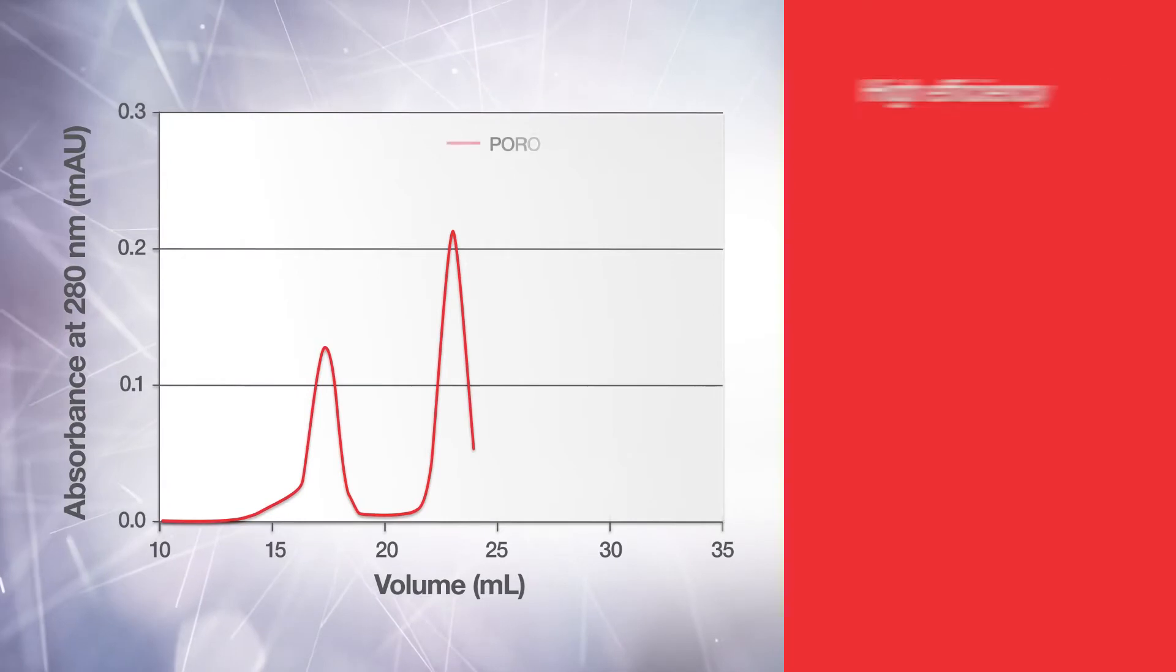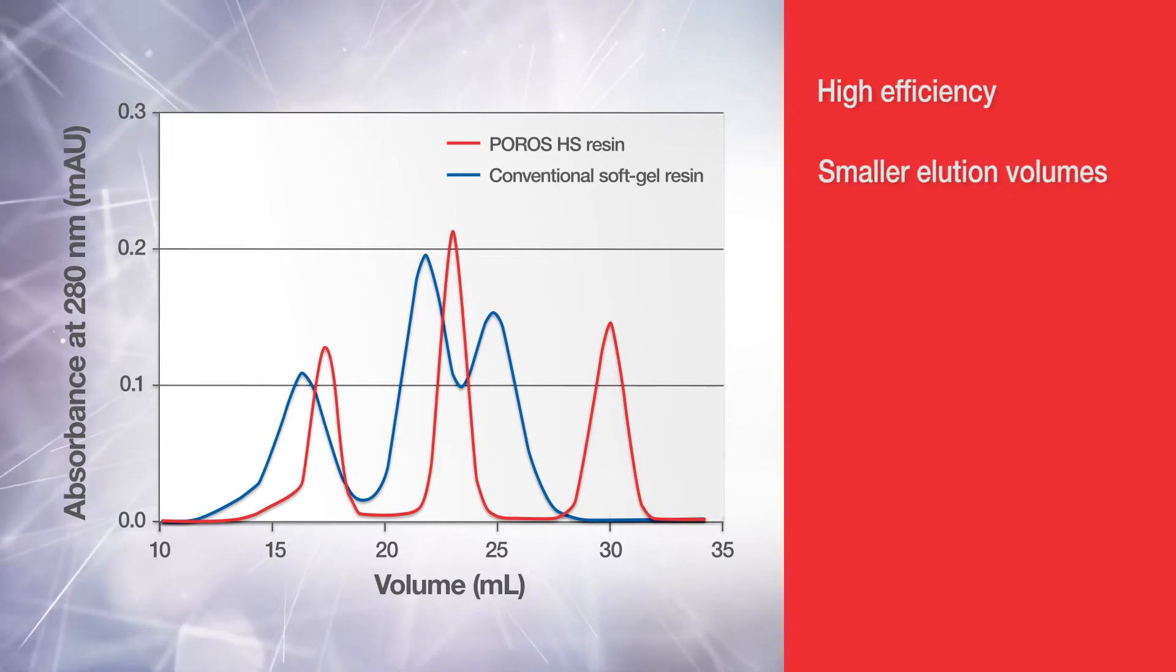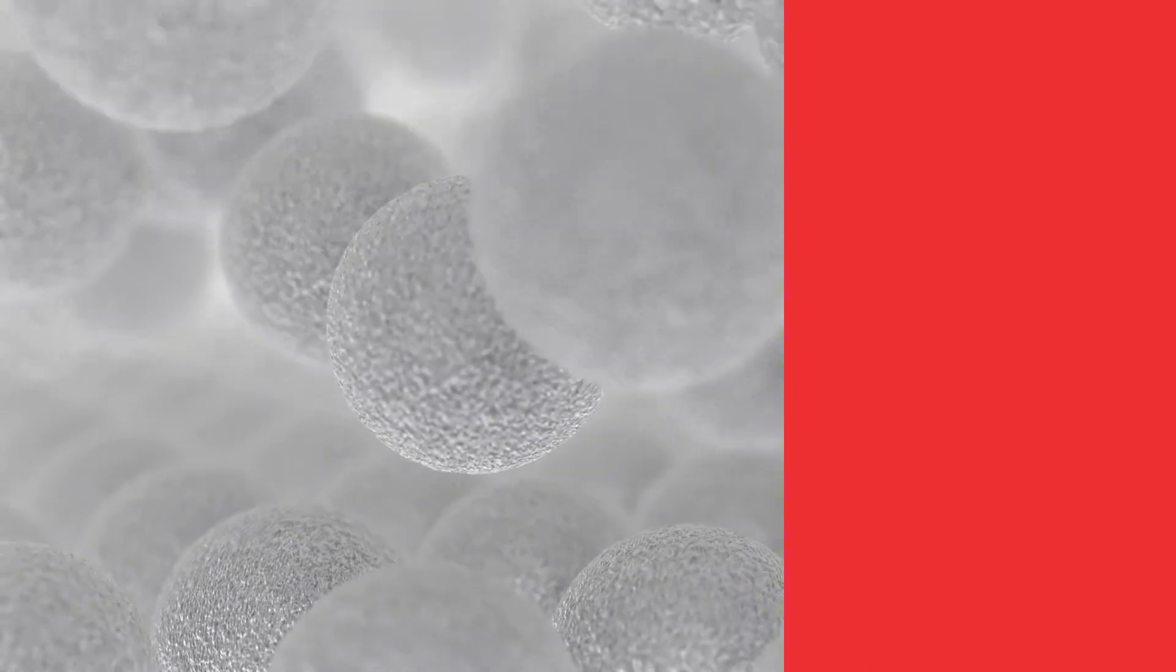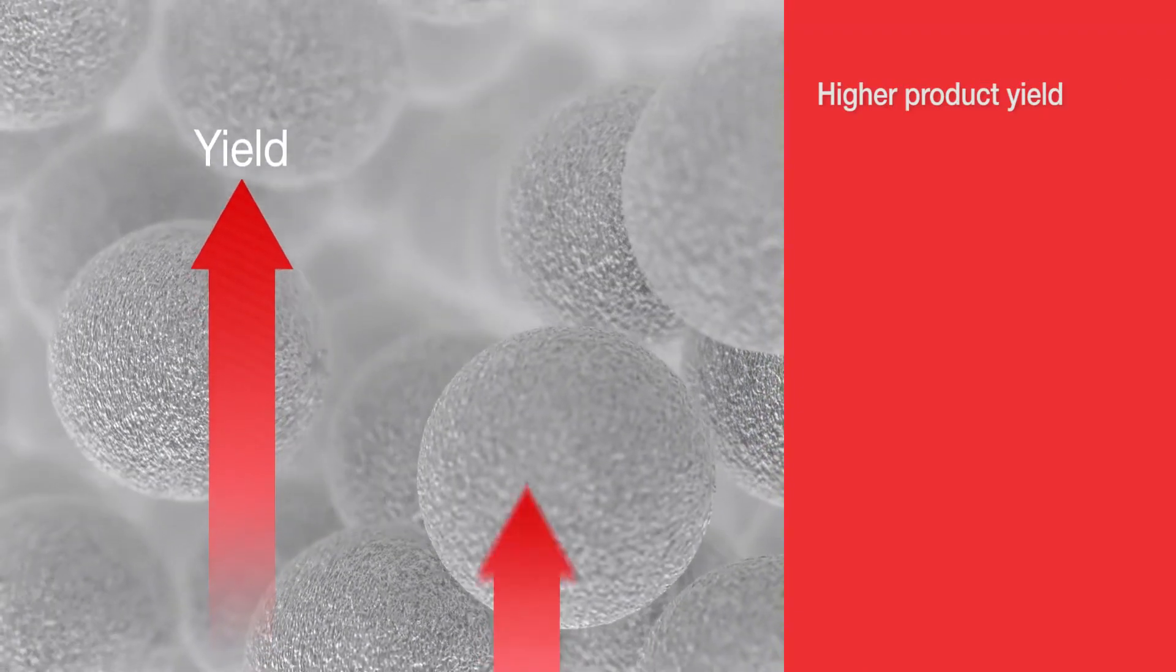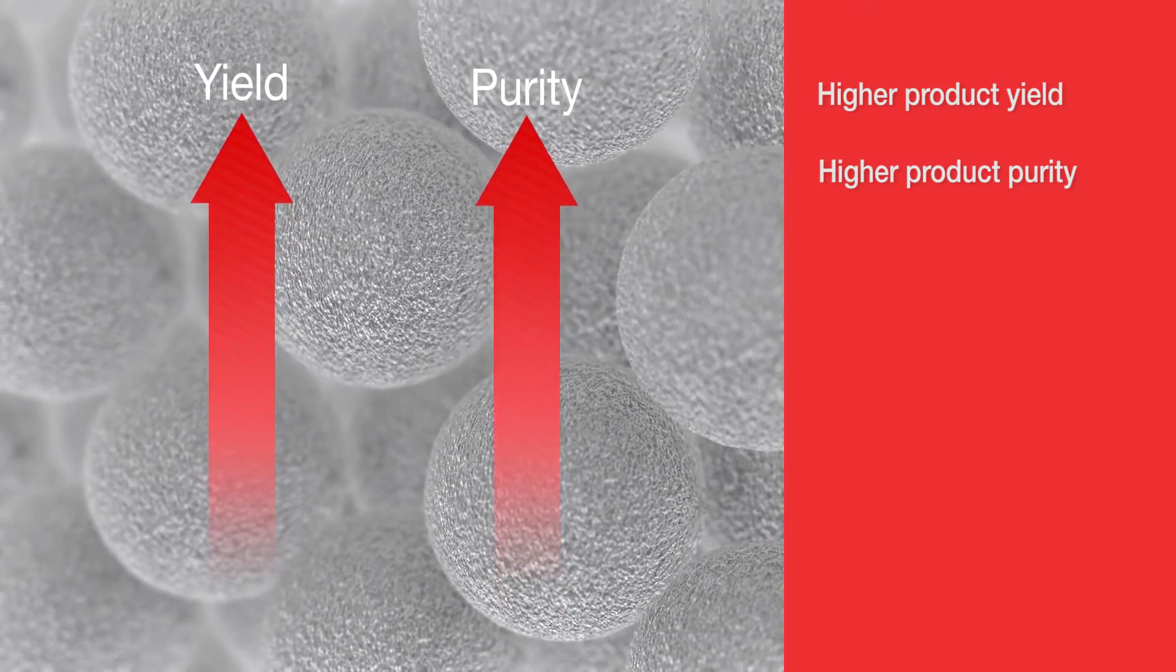Porose 50 micron beads enable high efficiency, resulting in tighter elution peaks and thus smaller elution volumes and fewer loads for subsequent steps. Porose beads are designed to provide higher product yield and higher product purity through improved impurity removal.